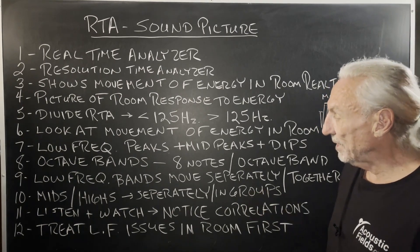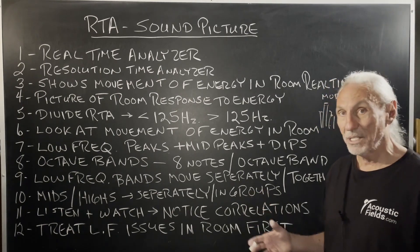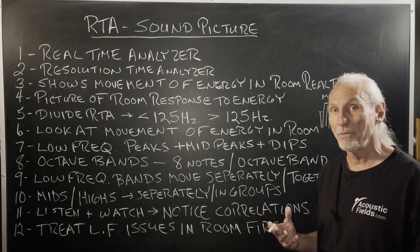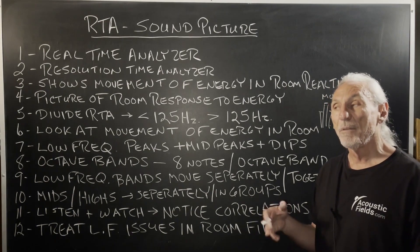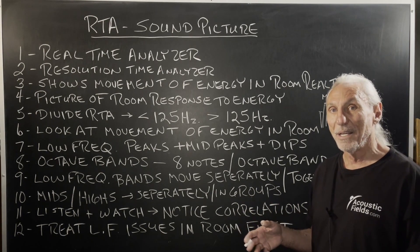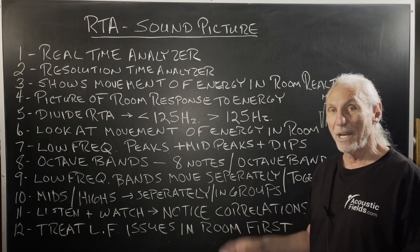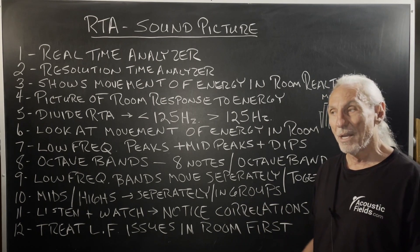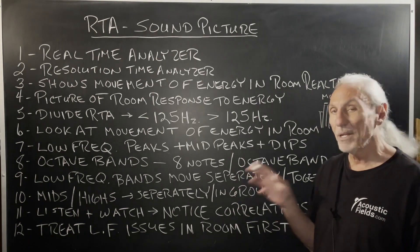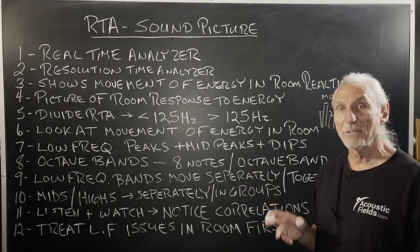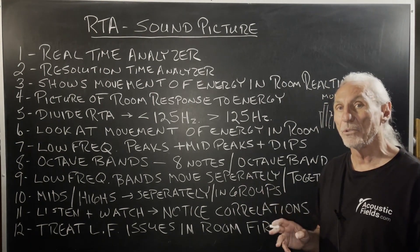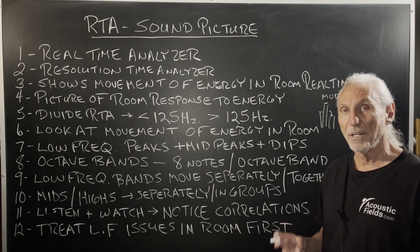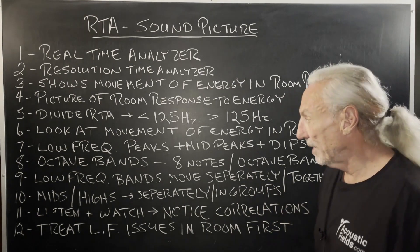Look at the movement of the mids and highs. Are they separate? Are they moving in groups? Are the octave bands moving in groups? For mids and highs, that's okay — that shows a nice smooth transition between the bands. But in the low frequency area, we want those octave bands to move individually. That's where you get real good definition and separation in the low end.